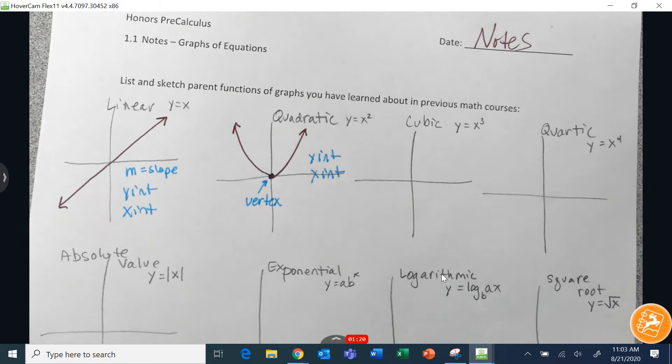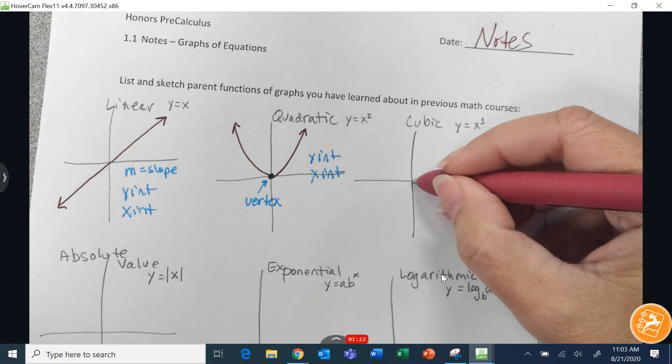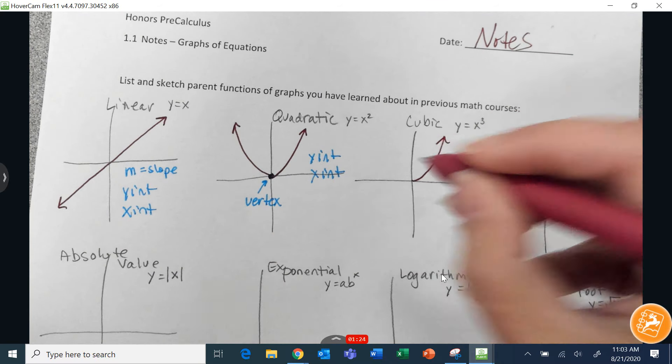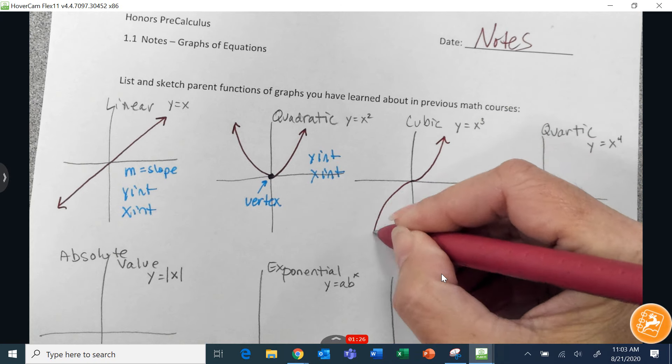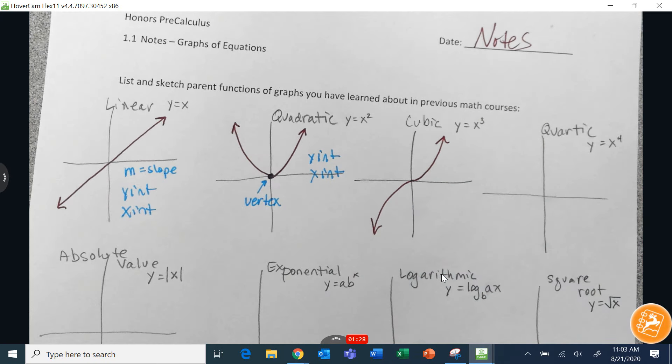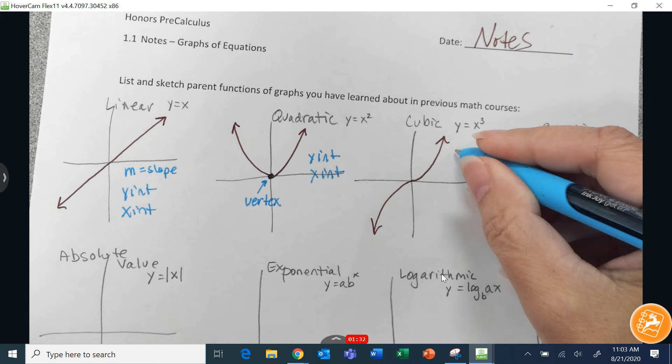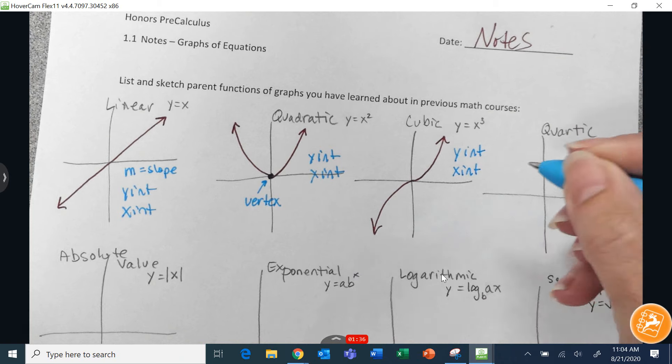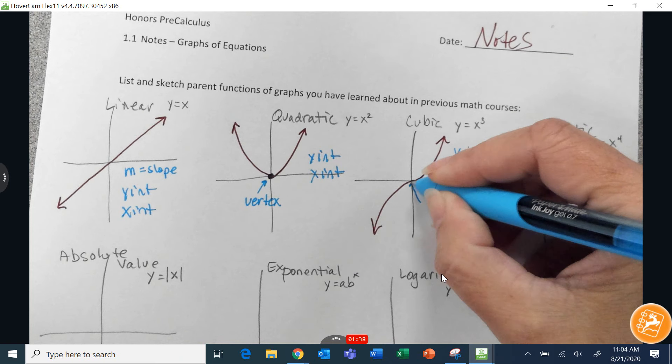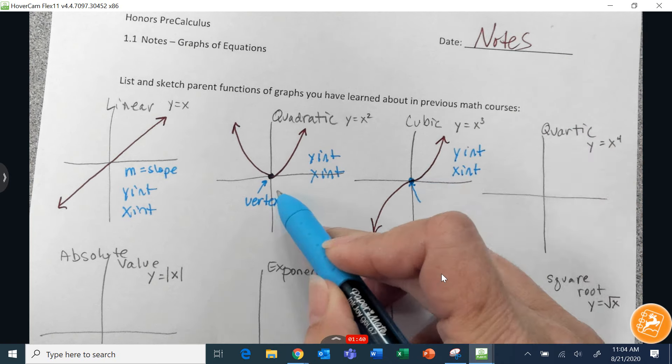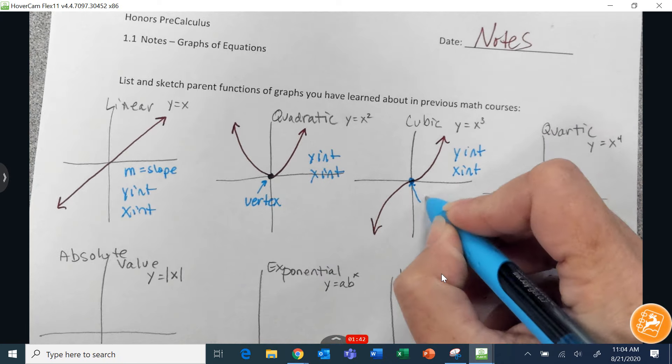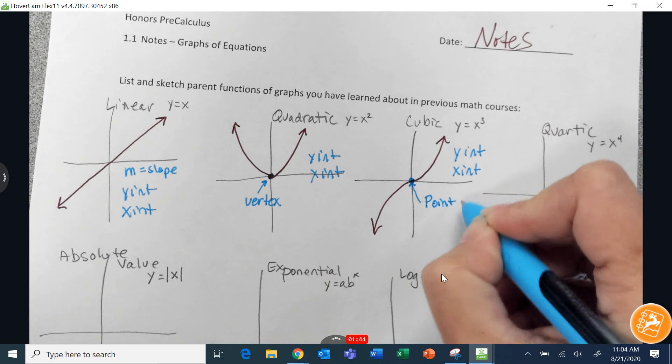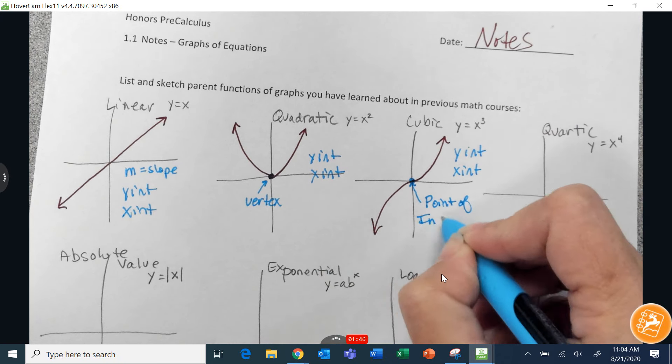A cubic. We've got a graph that looks like that. And with a cubic, you're usually asked to find the y-intercept, the x-intercept. And this point here is kind of like the vertex for quadratic, but it is called a point of inflection.